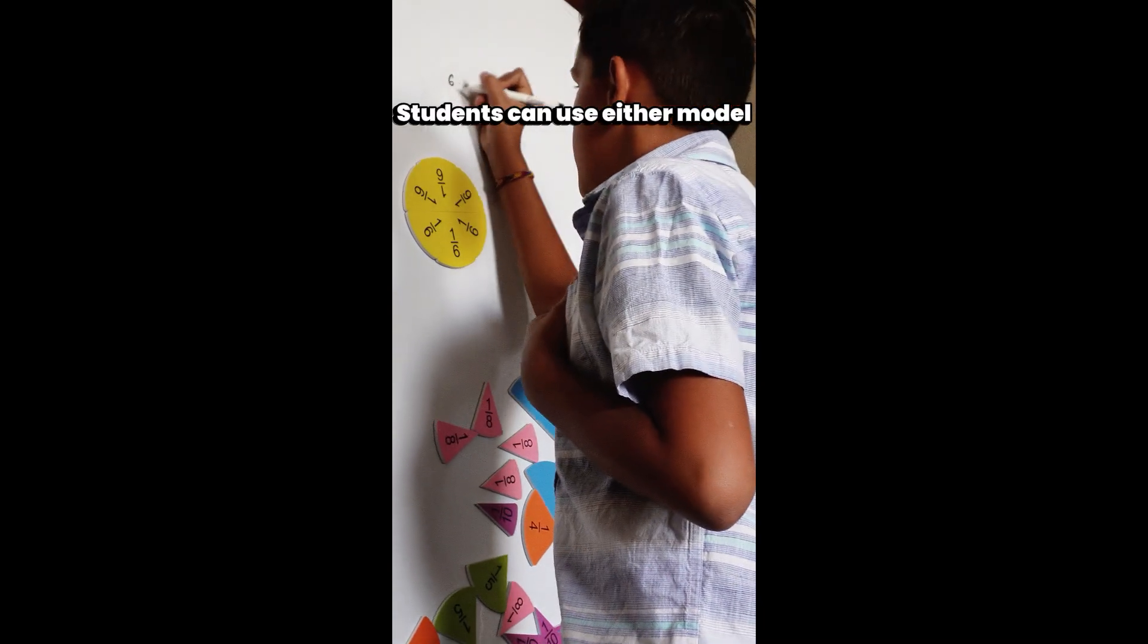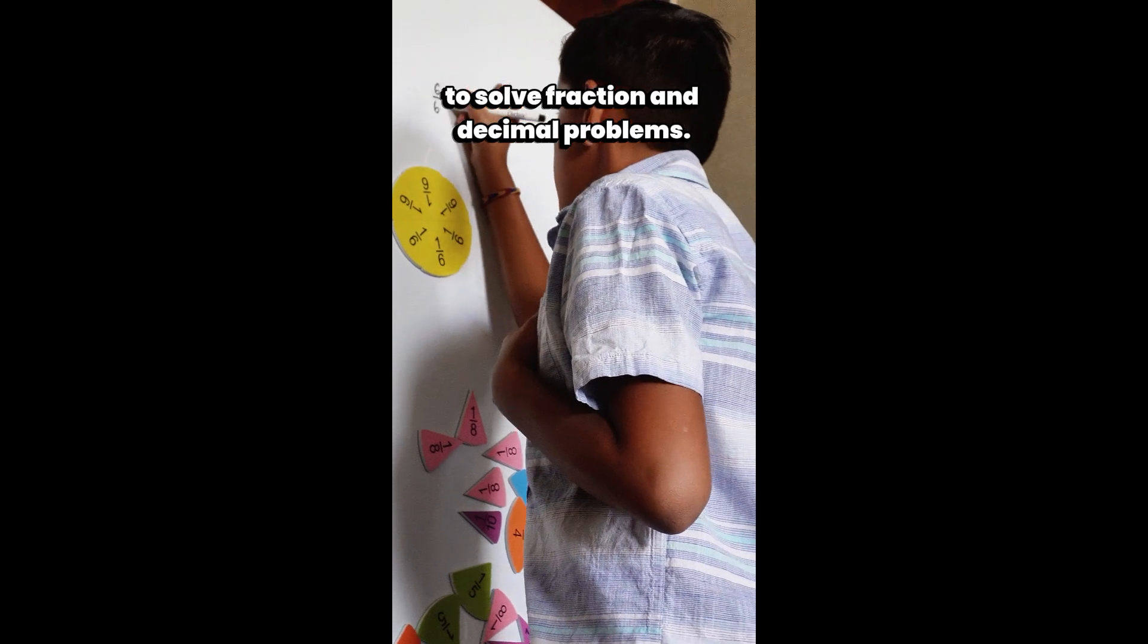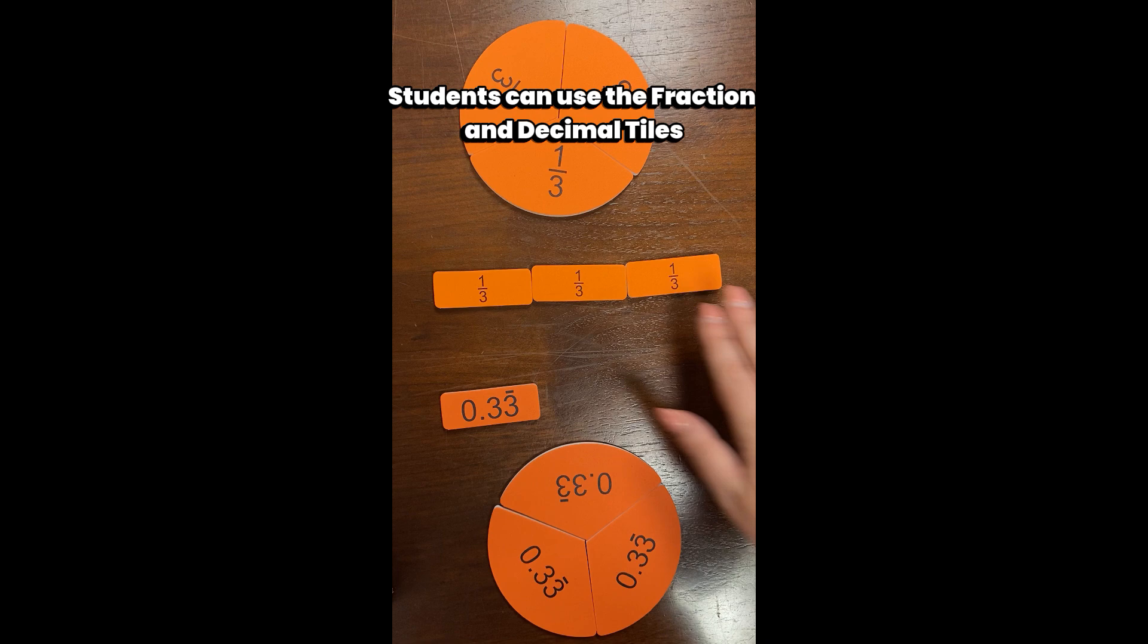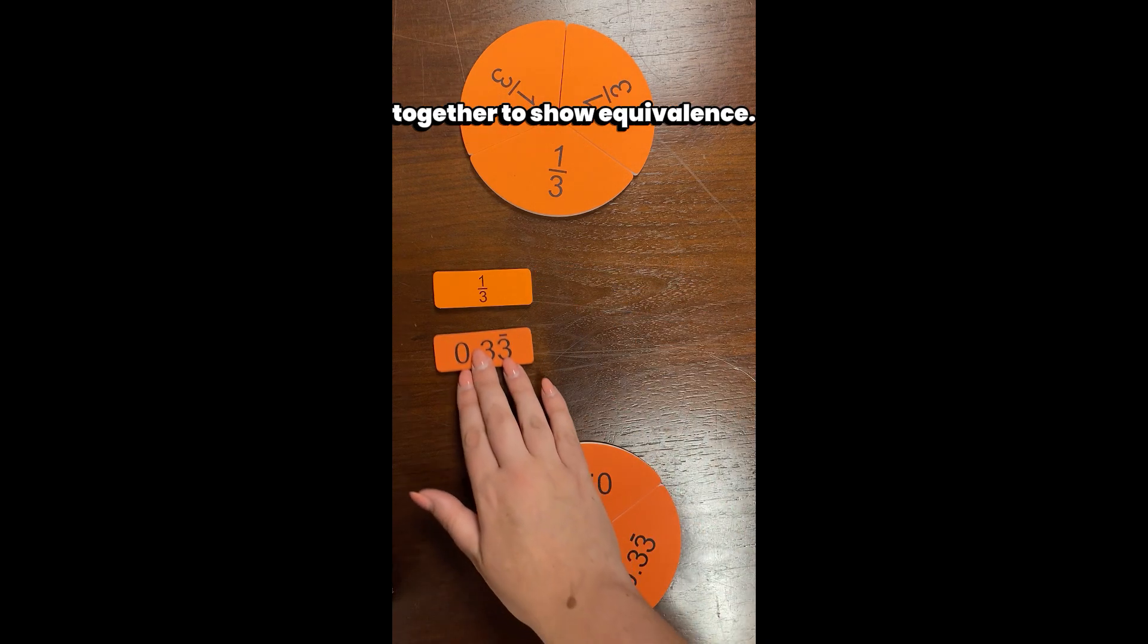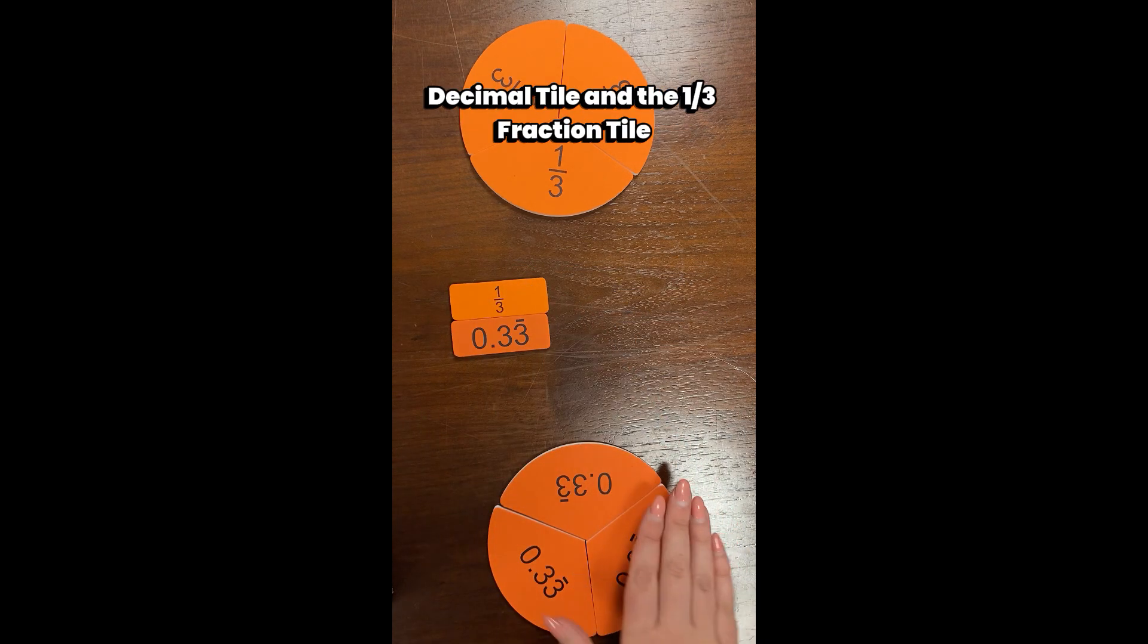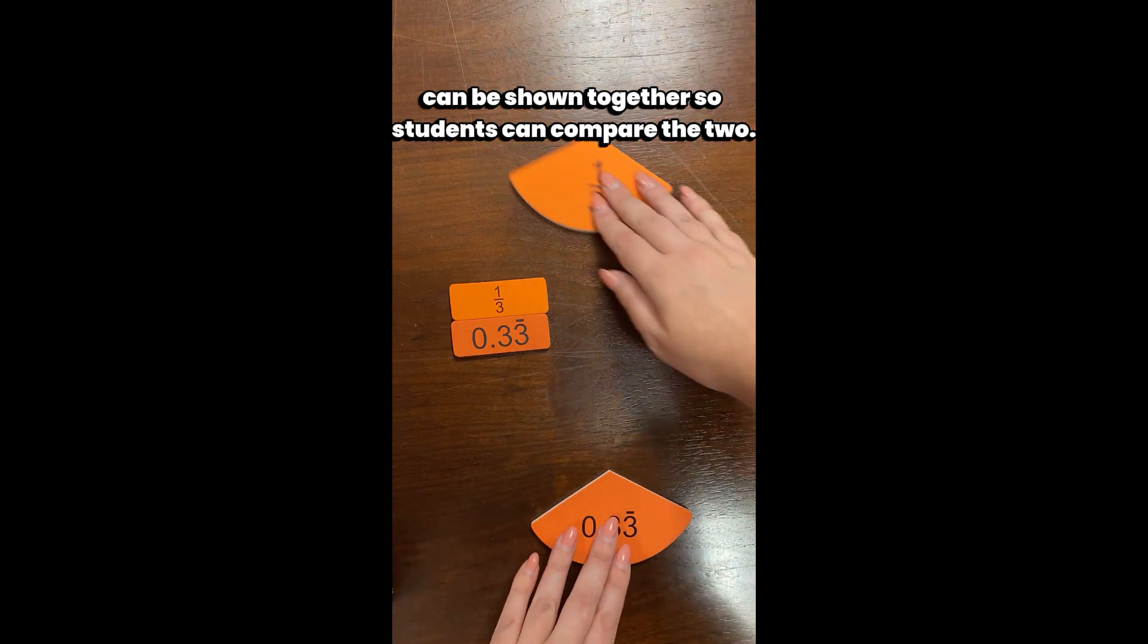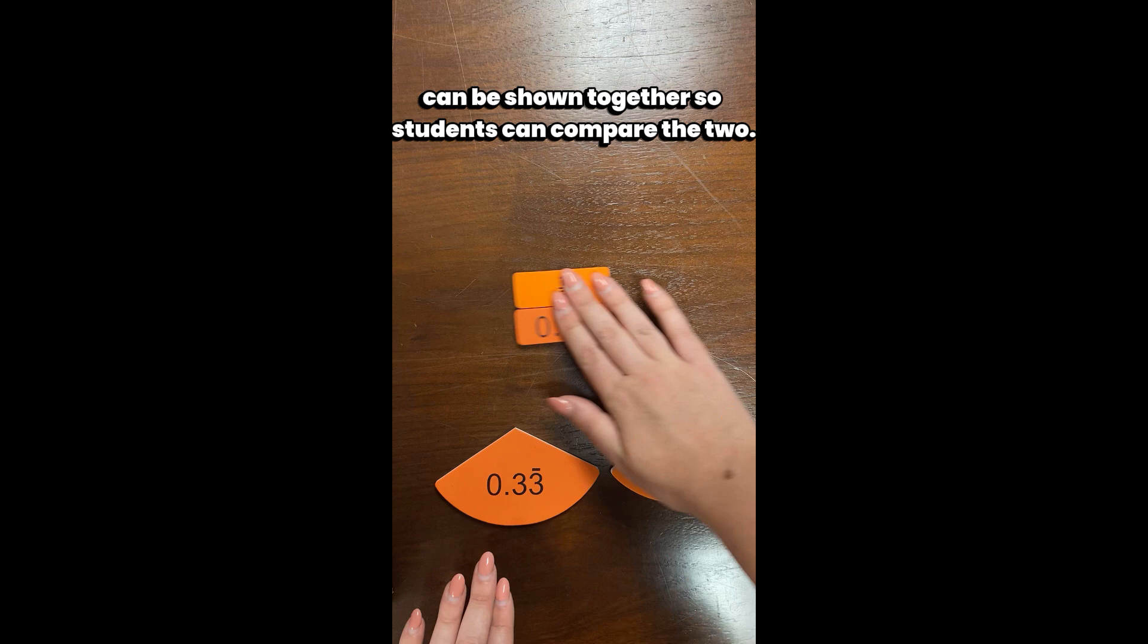Students can use either model to solve fraction and decimal problems. Students can use the fraction and decimal tiles together to show equivalence. For example, the 0.33 decimal tile and the one-third fraction tile can be shown together so students can compare the two.